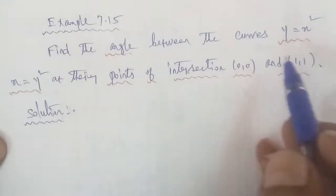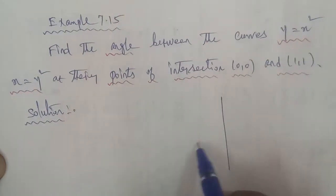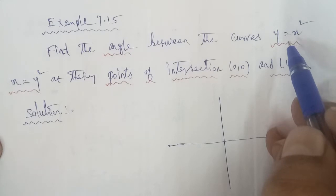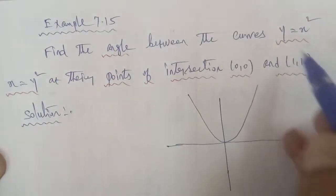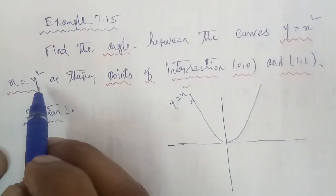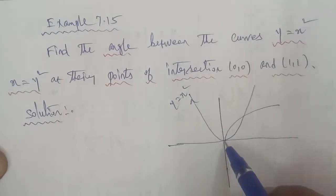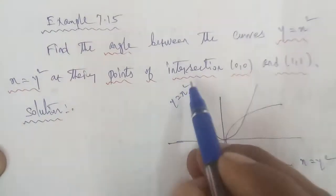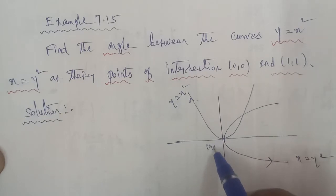Given this question, two curves are y is equal to x square and x is equal to y square. This is the diagram. y equal to x square is an open upward parabola, and x equal to y square is an open rightward parabola. The points of intersection are (0,0) and (1,1).